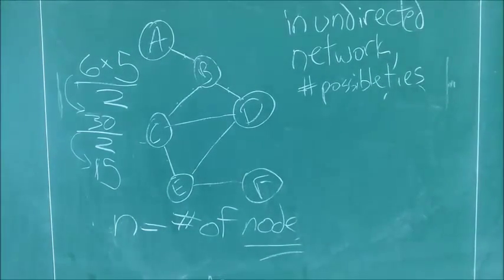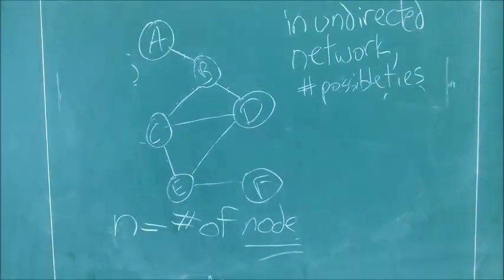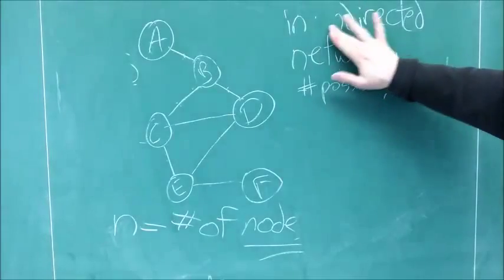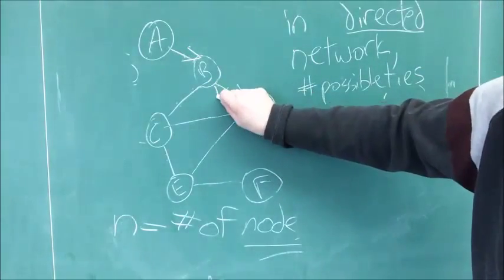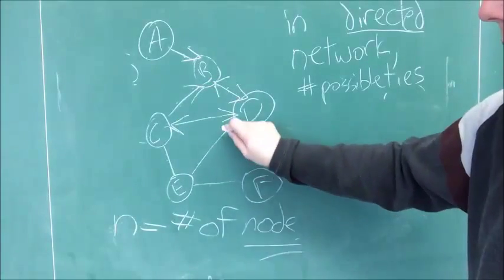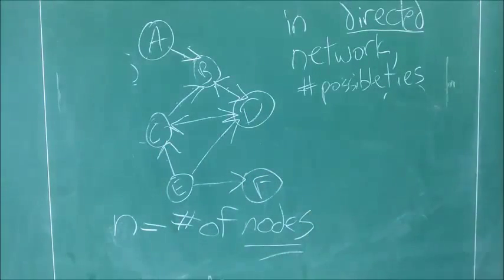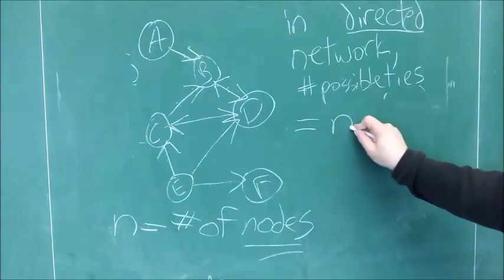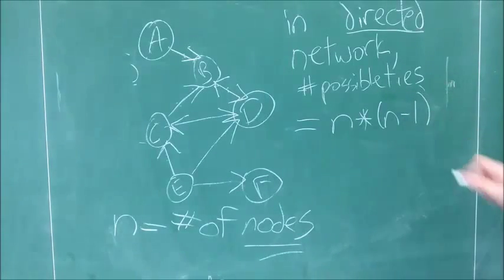So, let's take this network, this undirected network, and let's turn it into a directed network, a network with direction to the ties. Because it turns out that the formula for the number of possible ties is just slightly different in a directed network. Now, I'm going to add arrows, and sometimes I'll make a double arrowhead, and it's important to know that when there's a double arrowhead, that's just a way of saying there are two ties, one going one direction and one going the other way. So, you count both.